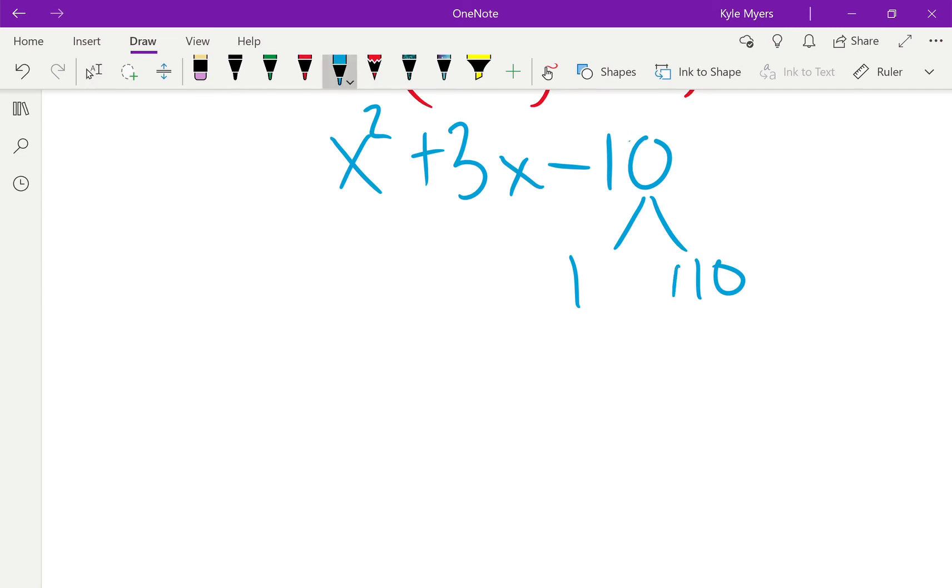If I do that, that would give me negative 10 if I multiply, but that's not going to give me 3 when I subtract. So go on to the next one: 2 and 5. Well that works. Check it out, if I do minus and plus, negative 2 plus 5 is 3. So bingo, there we go.